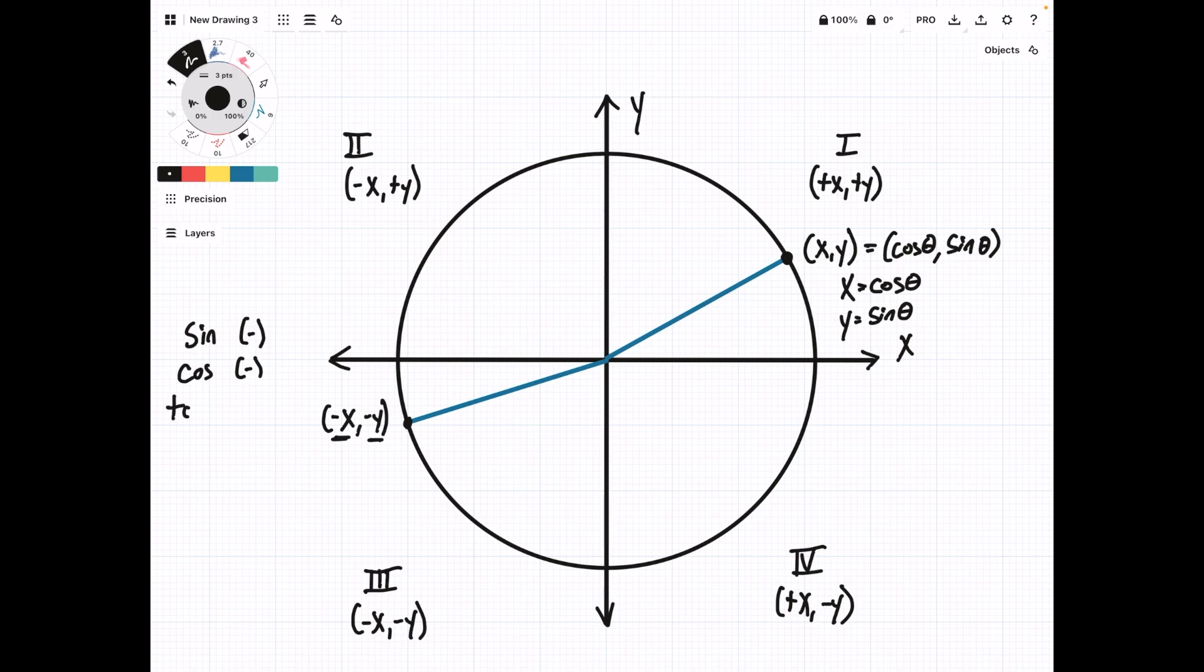Tangent is positive because that's sine over cosine, and we have a negative over a negative, so positive. Cotangent is 1 over tangent, so this is going to remain positive.